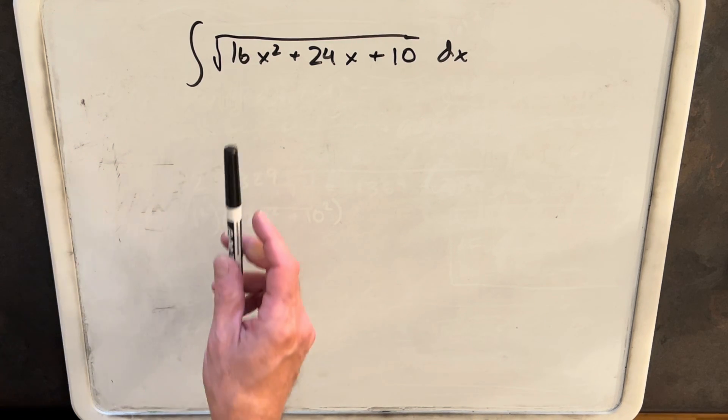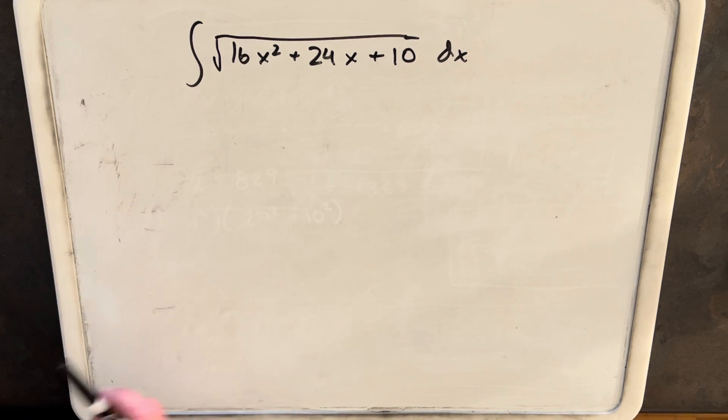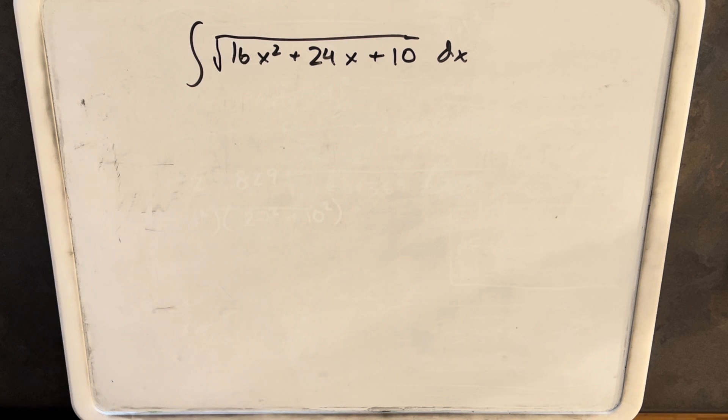First thing we notice, if we have an integral with a square root like this in it, we would like it for the inside to be a perfect square. But looking at this 10, that's not a perfect square, so this is not going to factor nicely, but what we can do is complete the square.